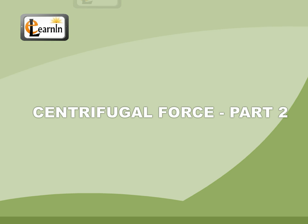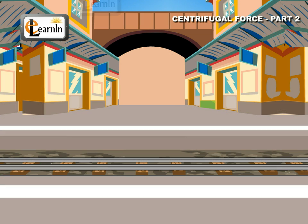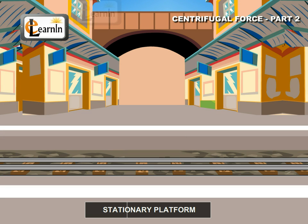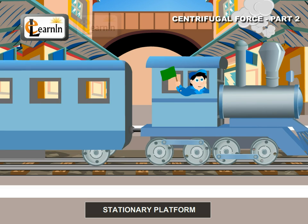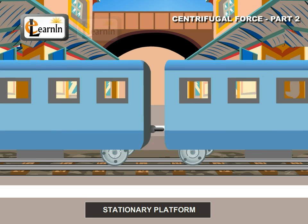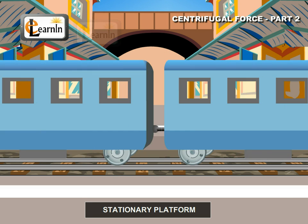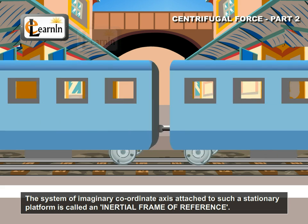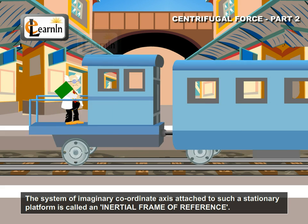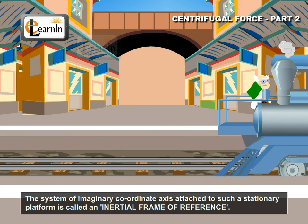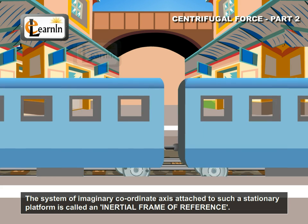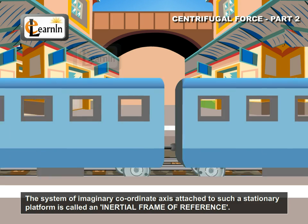Centrifugal Force 2. Consider a system of coordinate axes attached to a stationary railway platform. The train is said to be in motion relative to the stationary platform. The system of imaginary coordinate axes attached to such a stationary platform is called an inertial frame of reference.